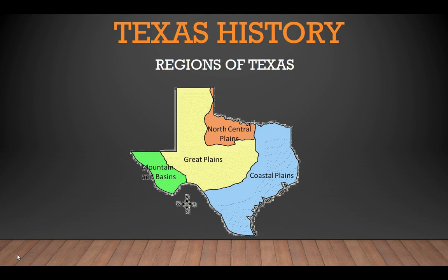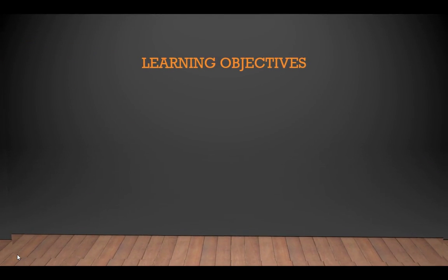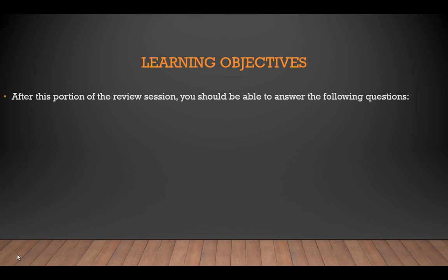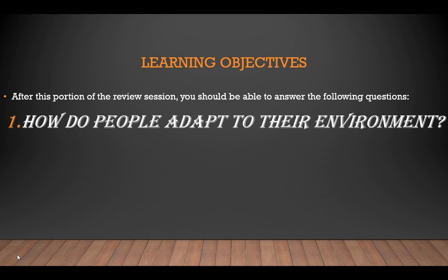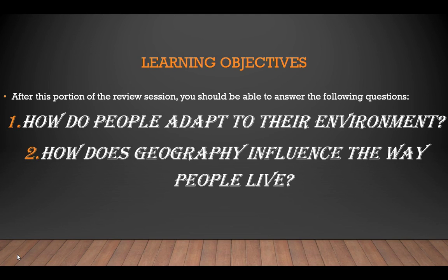If you're coming here at a later date, it should be up there. Now, Texas history — the regions of Texas. We're going to look at several different regions. After this lesson, you should be able to answer the following questions: First, how do people adapt to their environment? Second, how does geography influence the way people live? You should be able to answer these after watching the Natural Texas lesson and this lesson on regions of Texas.